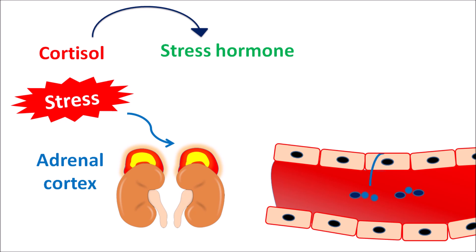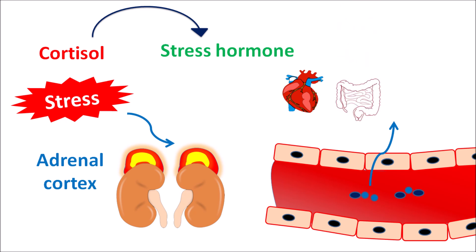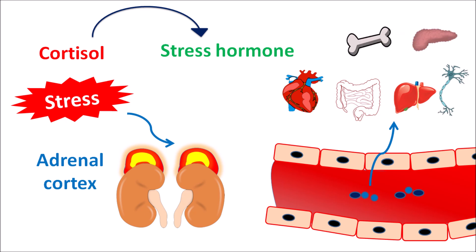Cortisol can stimulate the heart, resulting in increased heart rate. It can reduce the blood flow to the digestive system. It can also affect the bones and liver, where more glucose is produced, and it can modulate the functions of neurons and the pancreas. By all of these actions, cortisol can reduce inflammation during the stress response.